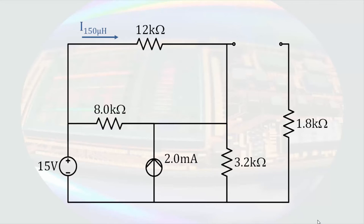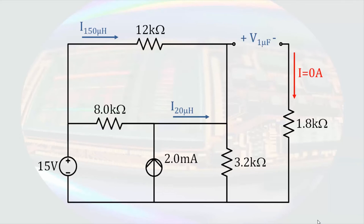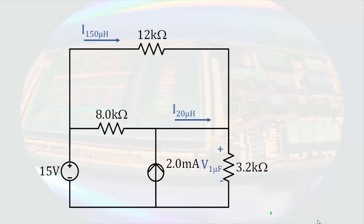We will need to know the current through the 150-microhenry inductor, which is also the current through the 12-kilohm resistor. We will need to know the current through the 20-microhenry inductor, which will be the sum of the 2-milliamp source and the current through the 8-kilohm resistor. We will also need to know the voltage across the 1-microfarad capacitor. Another simplification: because the capacitor became an open circuit, no current will flow through the 1.8-kilohm resistor, and therefore there will be no voltage change across it. The voltage across the 1-microfarad capacitor will also be present across the 3.2-kilohm resistor. There are several analysis techniques we could use, but looking at the circuit, one node equation can solve the whole circuit.